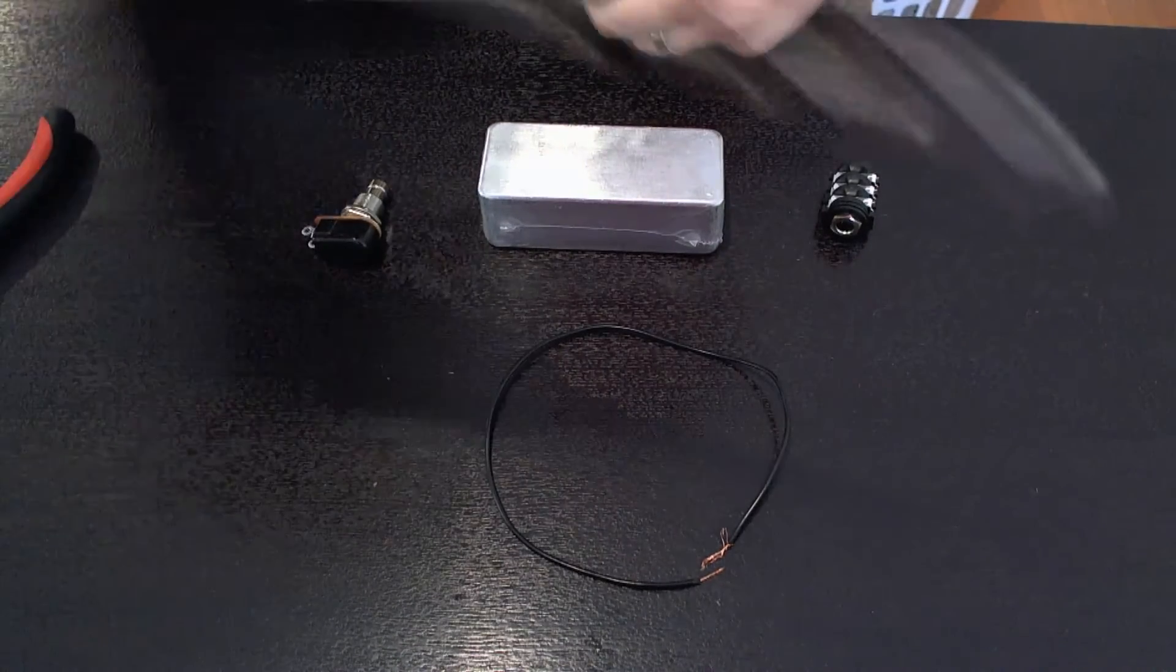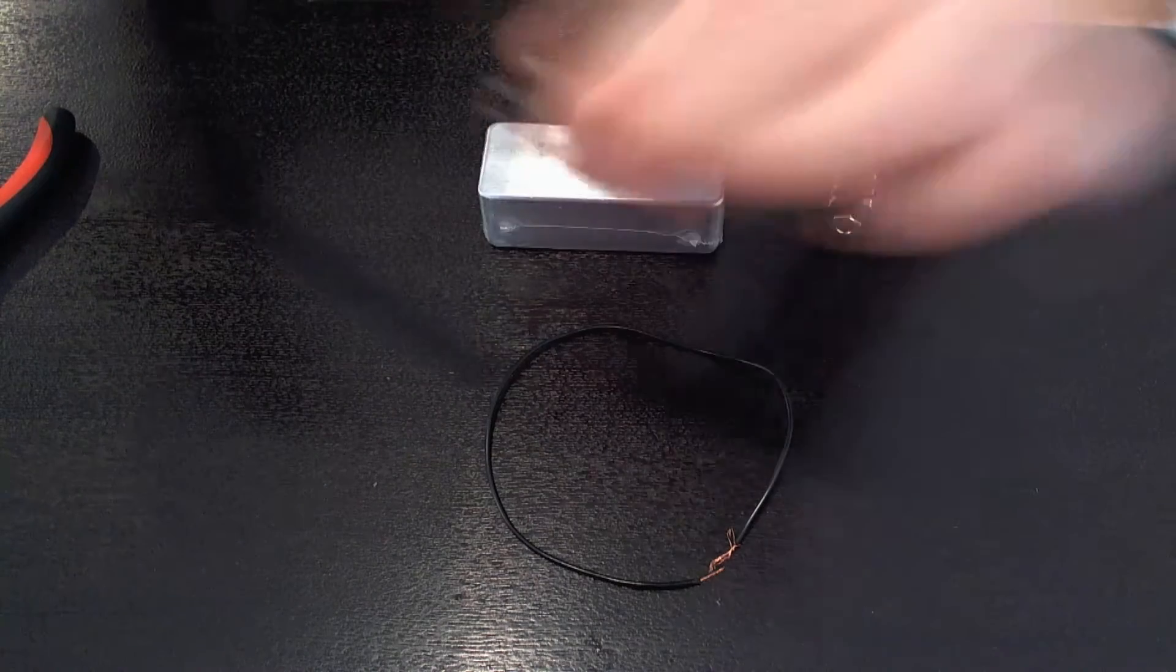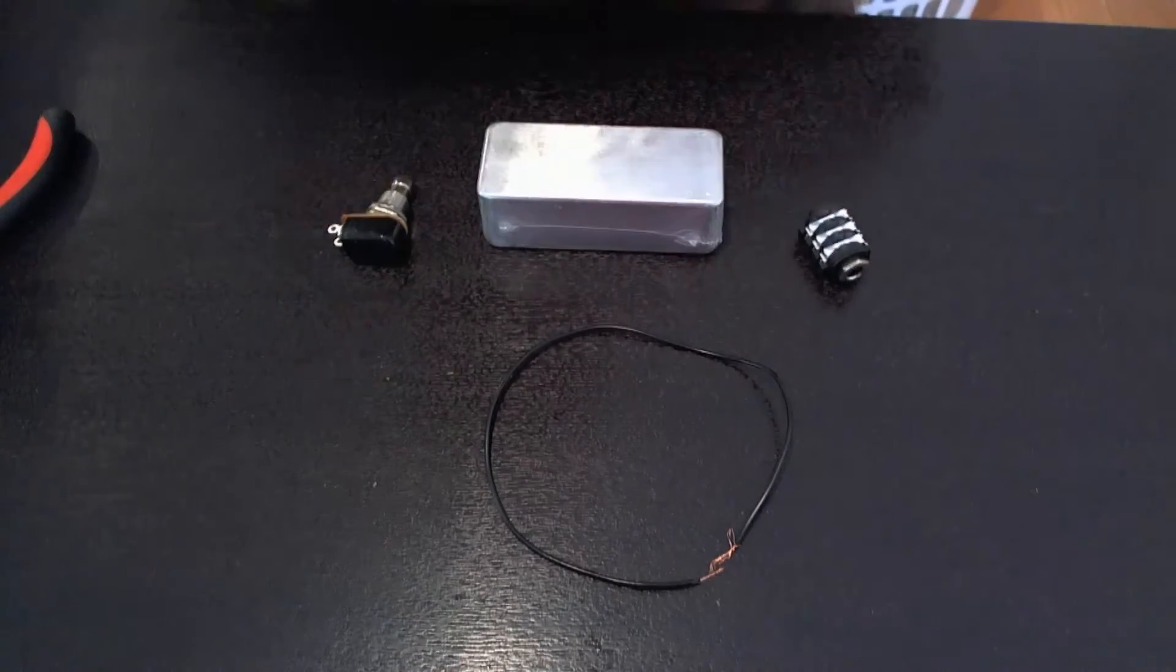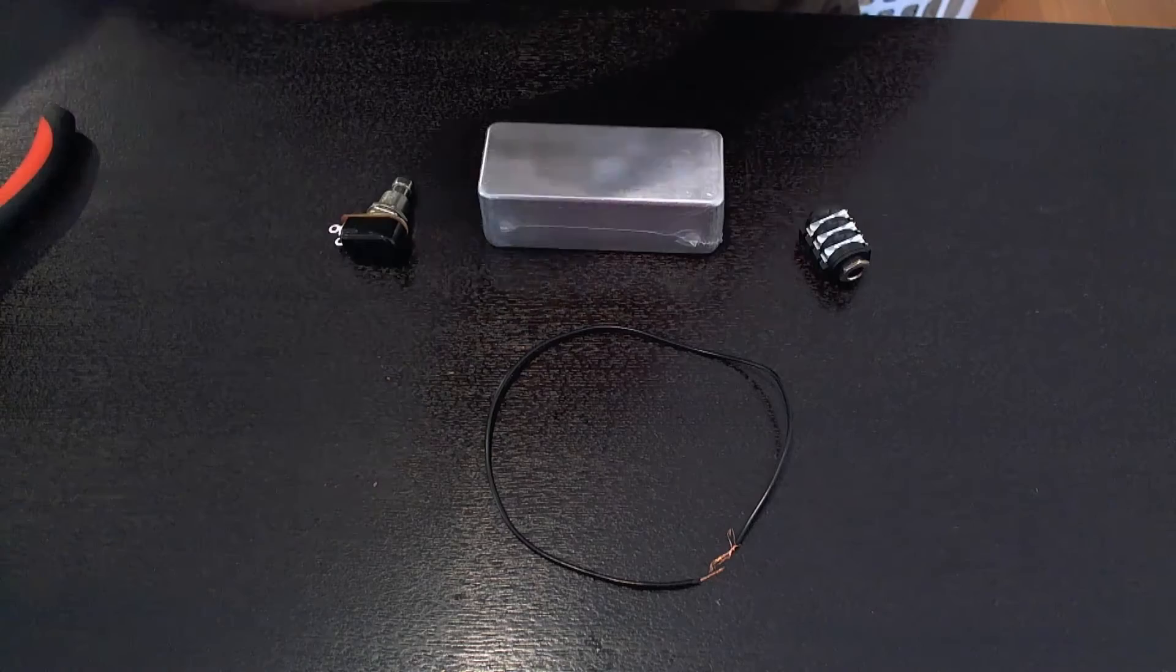In terms of tools you'll need a drill. Now I'm using a 12mm bit to go with the momentary switch and the jack. You'll also need a soldering iron like this one. Some solder.